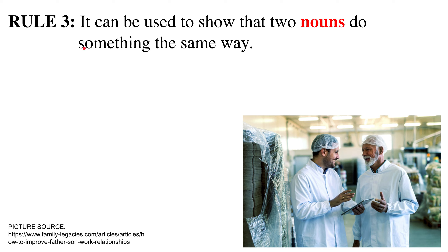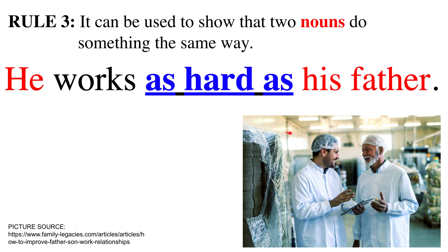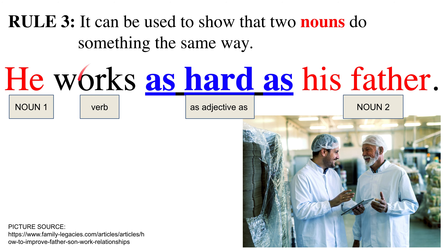Rule three: 'as adjective as' can be used to show that two nouns do something the same way. Here we have a father and a son who are both working, and it appears they both work equally hard. So we can say 'he works as hard as his father,' meaning he puts the same effort as his father. The adjective is 'hard.'